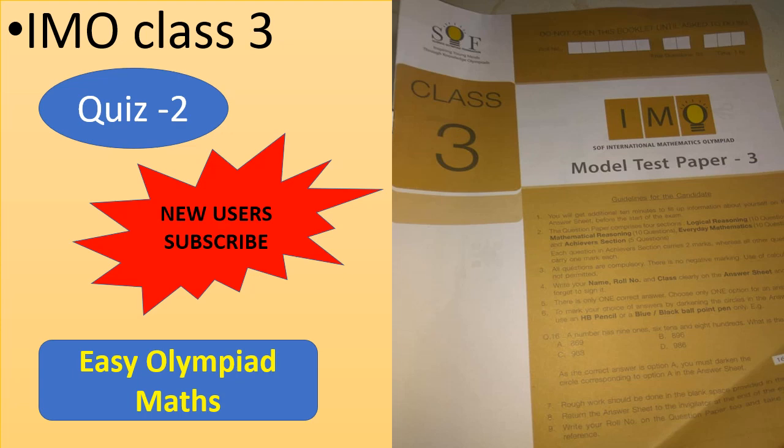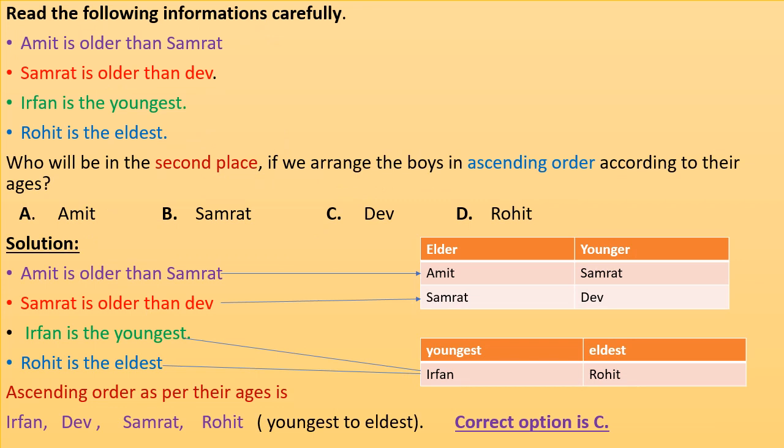Hello and welcome to Easy Olympiad Maths. These are questions from IMO model test paper for class 3. Take the quiz and try to solve the questions. New users, please subscribe to the channel and hit the bell icon to get notifications for new uploads. Let's start the video with our first question.